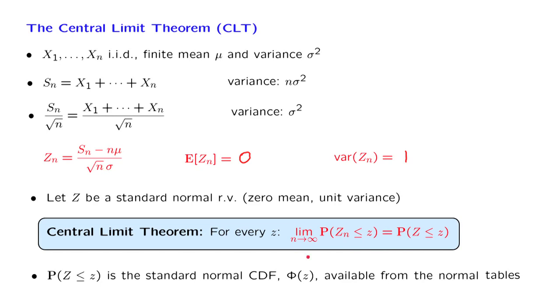And fortunately for the standard normal, the CDF is available in tables. So if we need to calculate the numerical value here, we can just look up the normal tables. And this suggests an approximation to this probability for the case where n is finite but large. When n is large, we can approximate this probability by this probability on the right, which we can find from the normal tables.